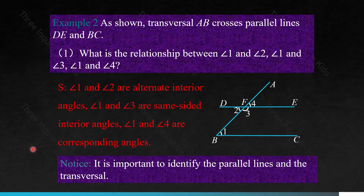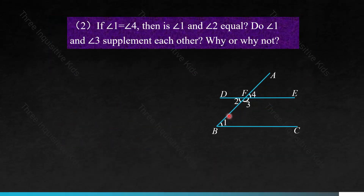Notice, it is important to identify the parallel lines and the transversal. When identifying angles, you don't just say the angles — you also have to clearly state which ones are the parallel lines and which line is the transversal. The transversal is a third line that crosses through two lines. If angle 1 equals angle 4, then are angles 1 and 2 equal? Do angles 1 and 3 supplement each other? Why or why not?